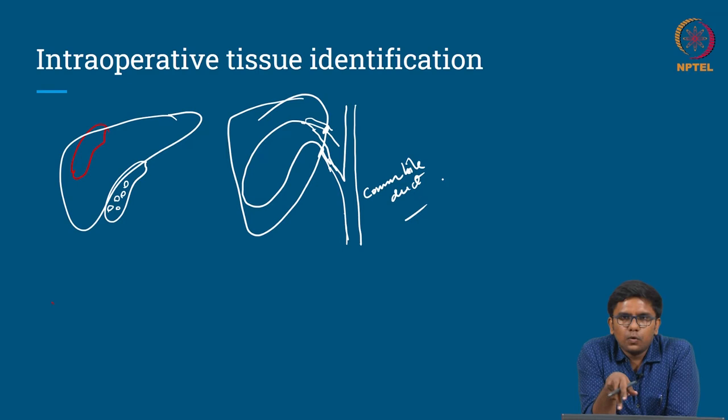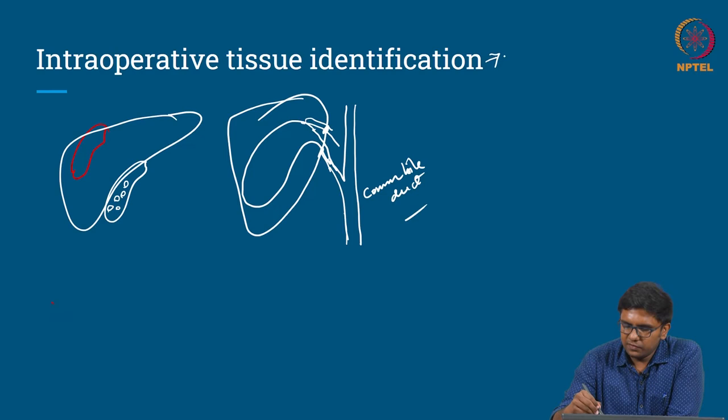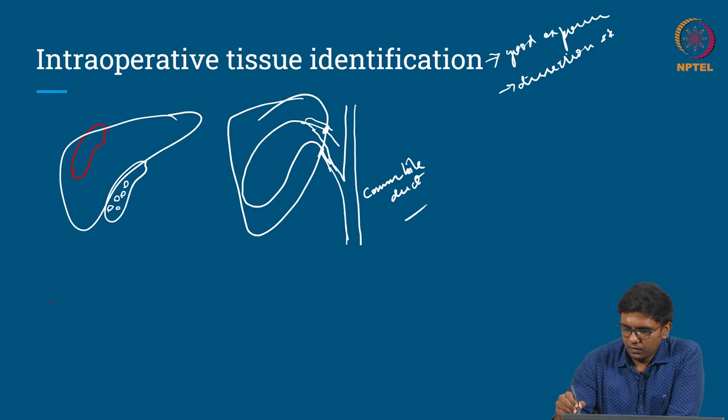Experienced surgeons would not have a big problem dealing with this, but this is especially useful for beginner surgeons. Correct intraoperative tissue identification requires good experience from the surgeon, dissection skills, and also sound anatomical knowledge.